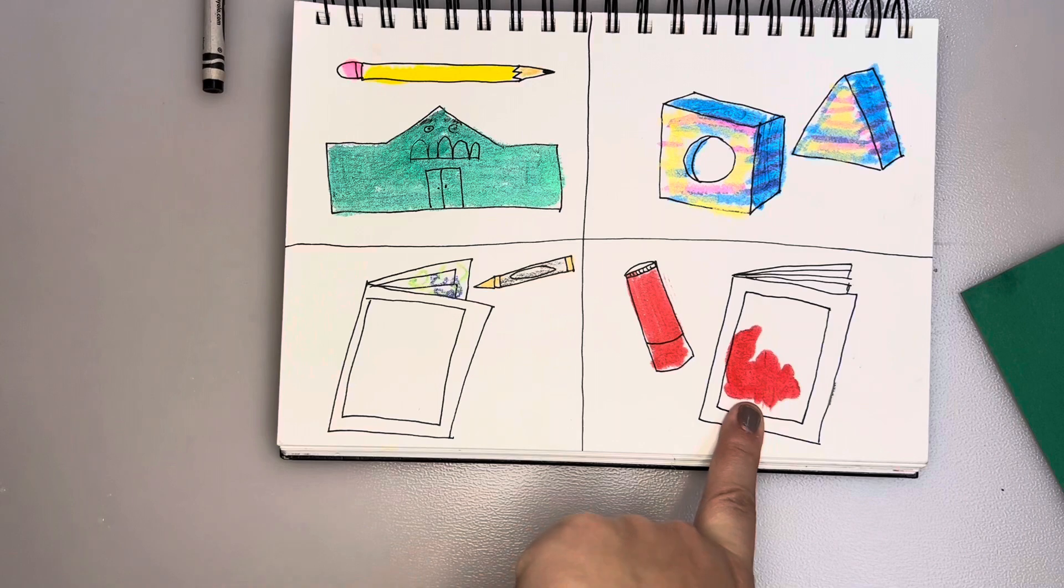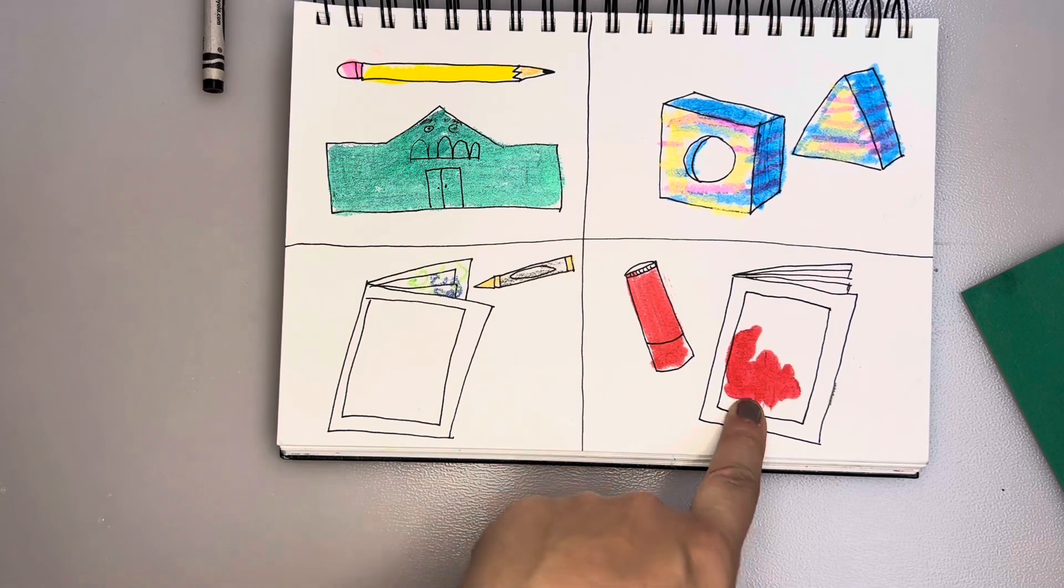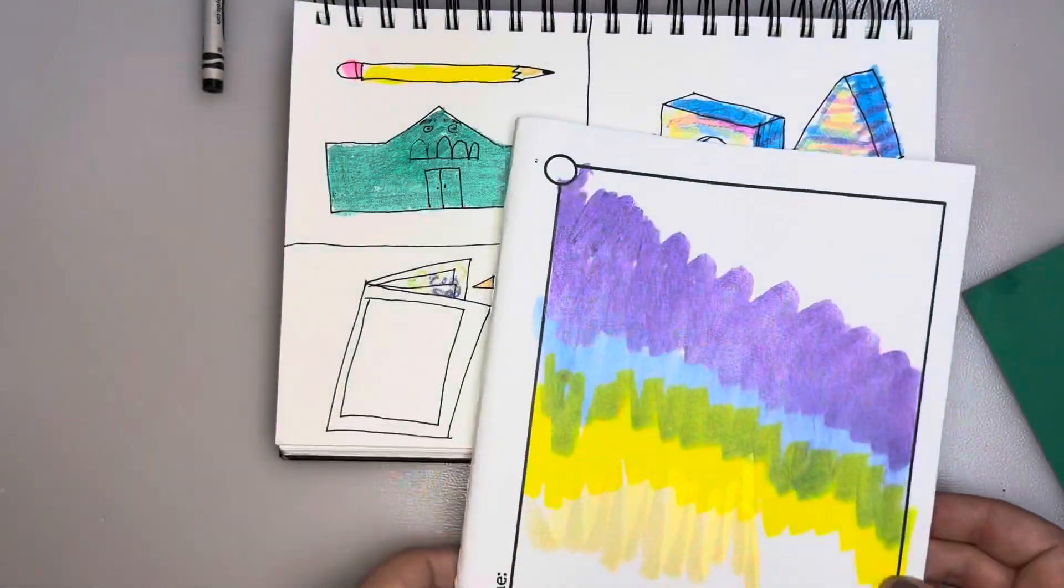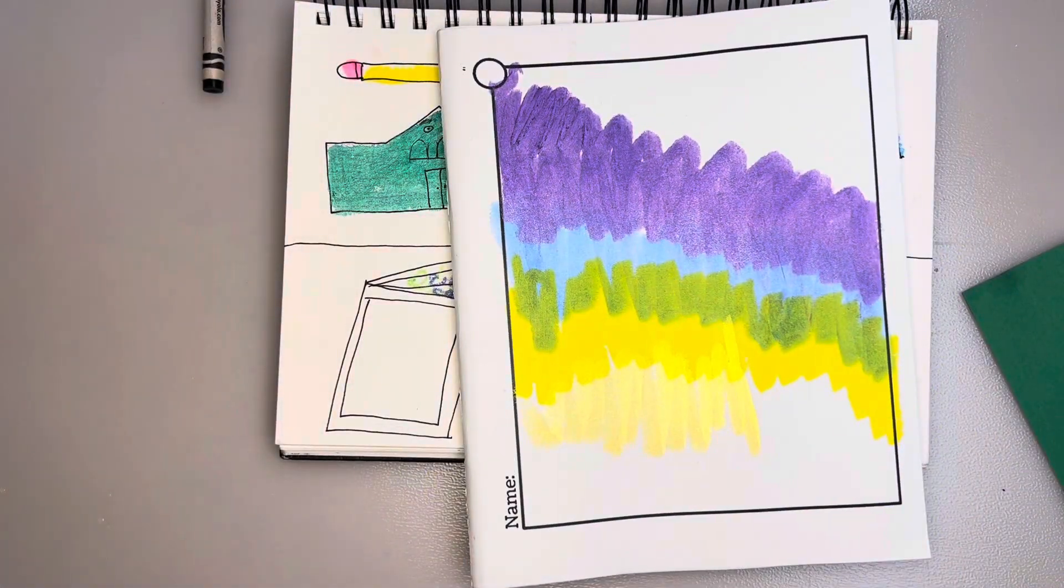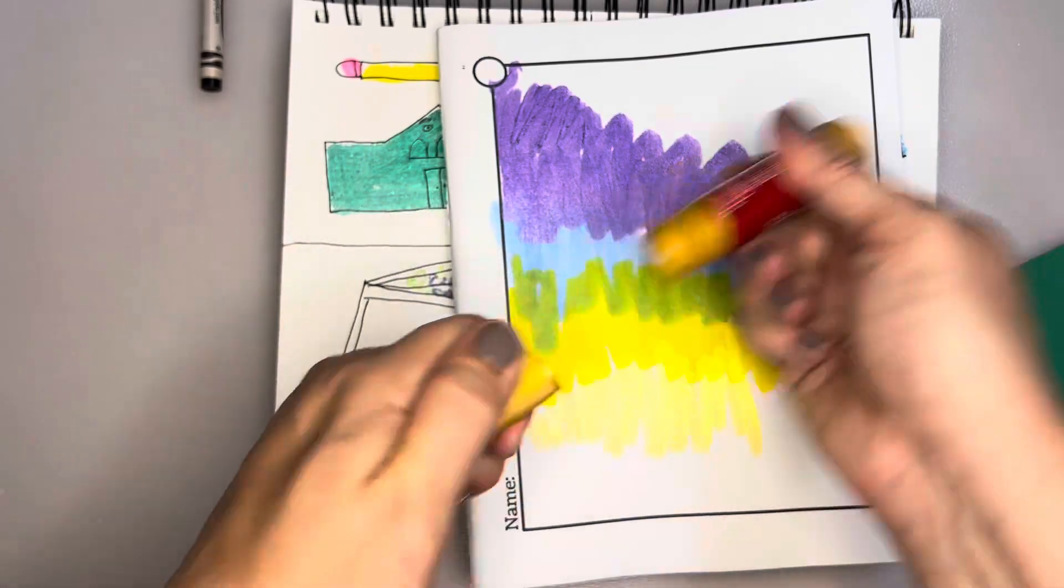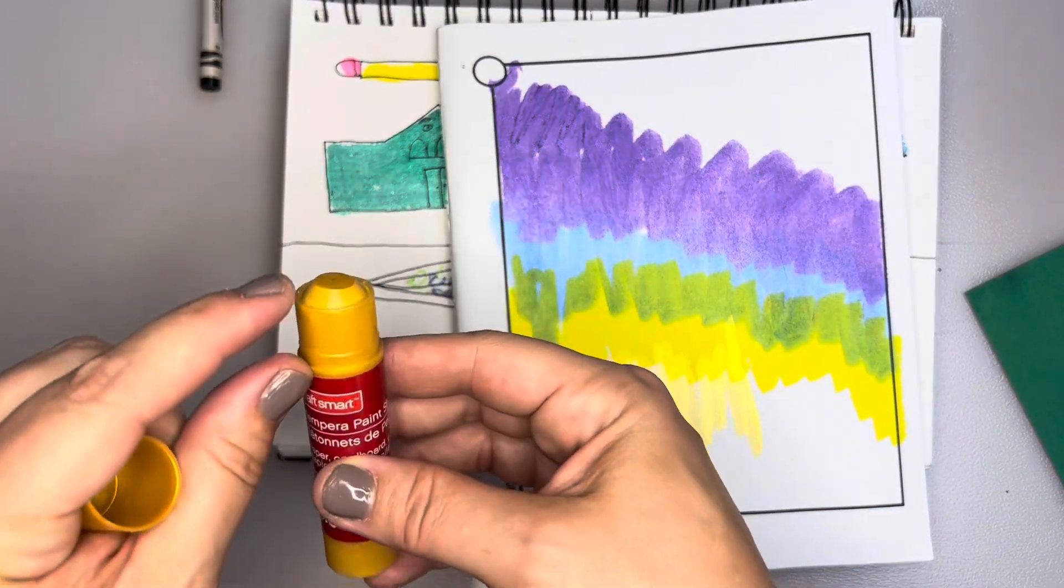This last choice will be to decorate your cover. We have a material you might not know about called a paint stick. It looks like a chapstick or a glue stick, but it's not. It's paint.